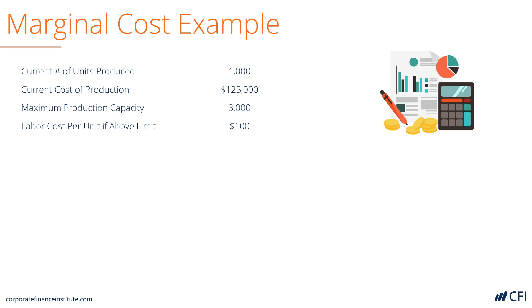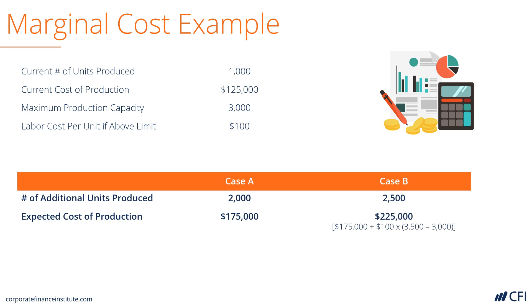The maximum production capacity of the facility is 3,000, and the labor cost for each unit above 3,000 is $100. Now let's calculate the marginal cost of production in two different scenarios.